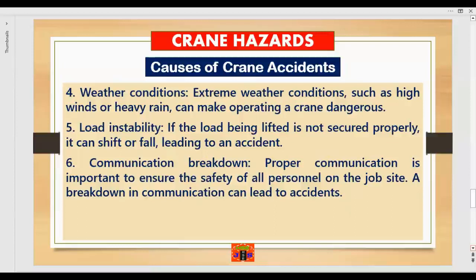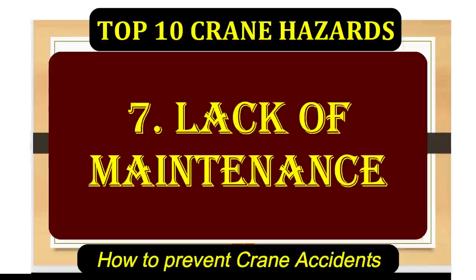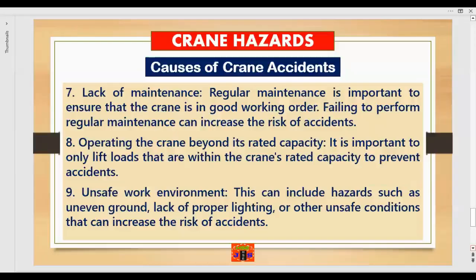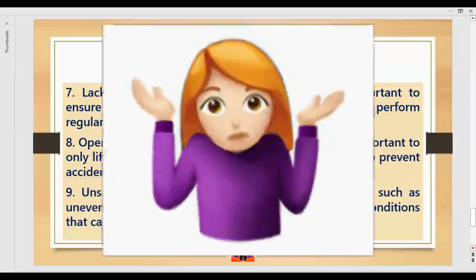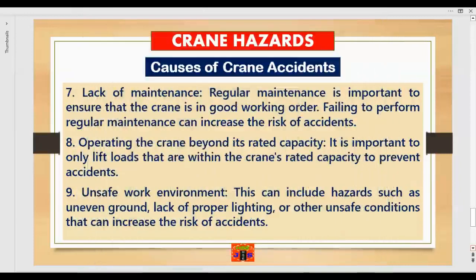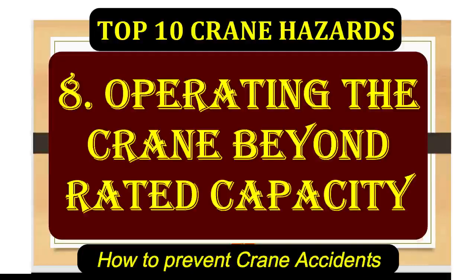Number six: communication breakdown. Proper communication is important to ensure the safety of all personnel on the job site. A breakdown in communication — between the rigger and the crane operator — can lead to accidents. Number seven: lack of maintenance. Regular maintenance is important to ensure the crane is in good working order; failing to perform it can increase the risk of crane failure and accidents.